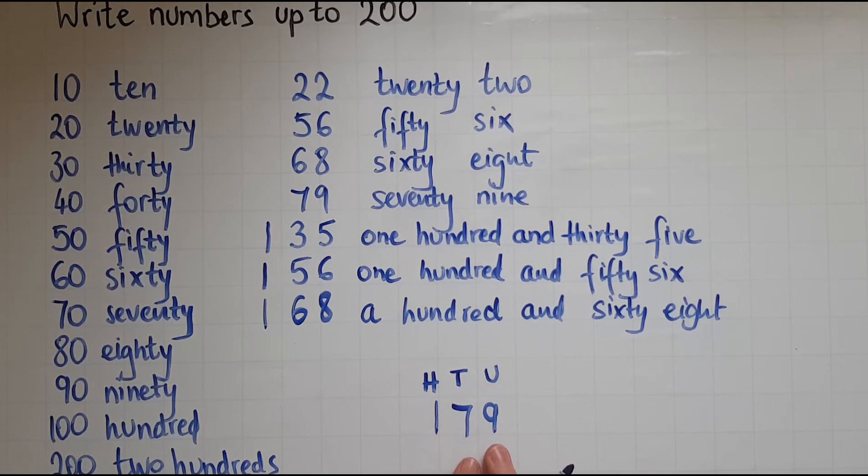Whereas this, 108. Because there are no tens, so we'd read it as 108. Because there are 8 units, 100, 108. How would I read this?